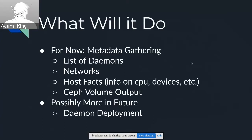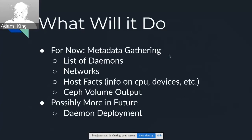We also have networks and host facts — just information about the host that could be useful; networks is pretty useful. Then LVM output, which is helpful for the disks. Right now we don't even refresh that very often, so this will make it faster — we'll have more up-to-date info on the disks on the host. In the future we can even set it up so that if the disks change, we'll immediately have the agent send more data. Maybe more things in the future too. Right now it's just metadata, but we've talked about the possibility of having the agent deploy daemons once this is stable — it could help with pulling a lot of OSDs. But that's future work.